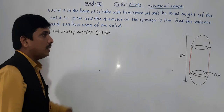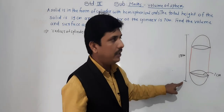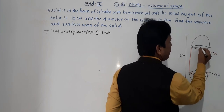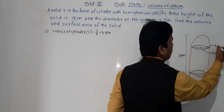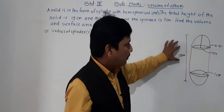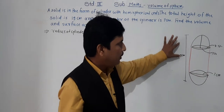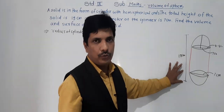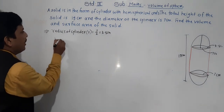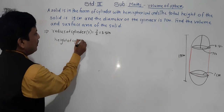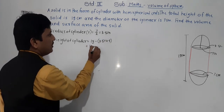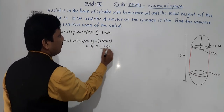The radius is 3.5 cm. Since the diameter is 7 cm, the radius of each hemisphere is also 3.5 cm. So we subtract both hemisphere radii from the total height: h = 19 − 3.5 − 3.5 = 19 − 7 = 12 cm. So the height of the cylinder is 12 cm.